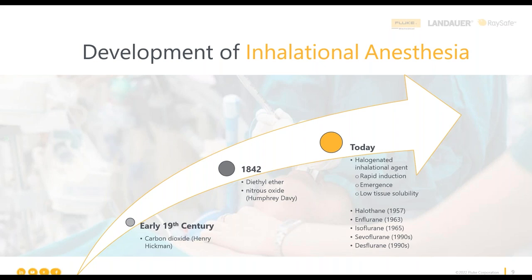As time went on further, we moved to inhalational agents, mostly due to their rapid induction, emergence, and low tissue solubility. The five inhalational agents we're talking about today are halothane, enflurane, isoflurane, sevoflurane, and desflurane. These are all used to varying degrees across the world in both hospital and veterinary settings. So over time, inhalational anesthesia has changed quite a bit from carbon dioxide to the agents we use today.